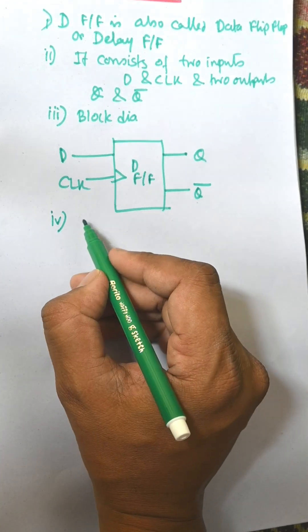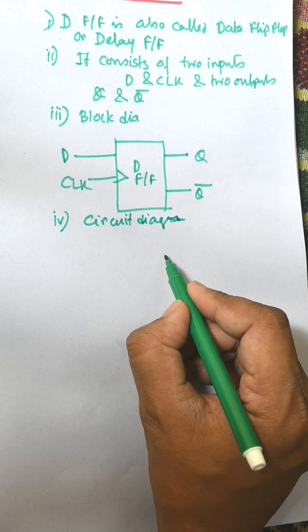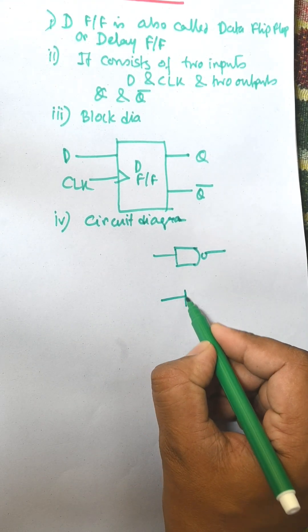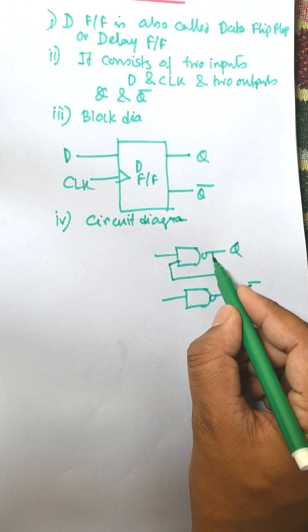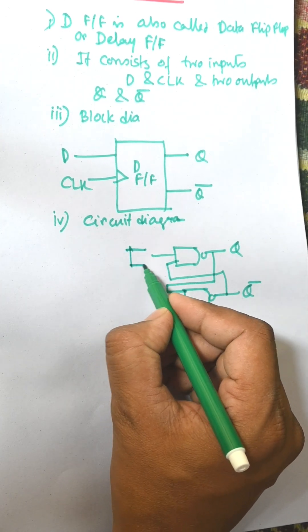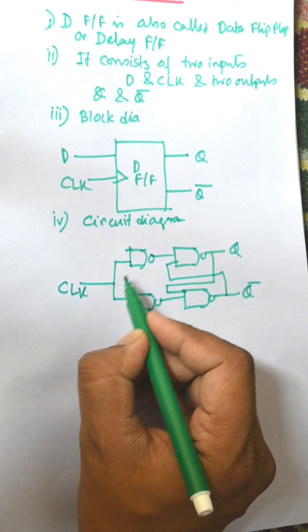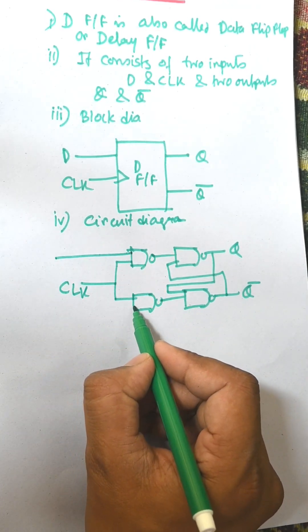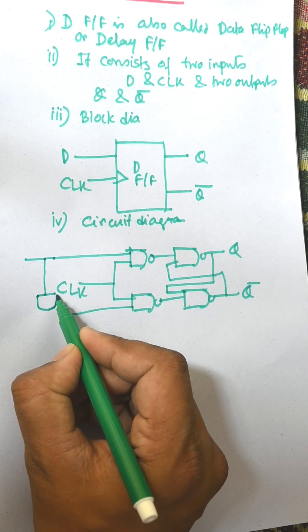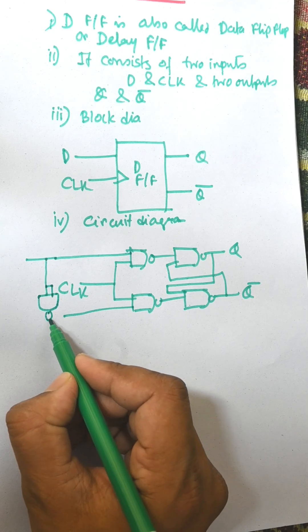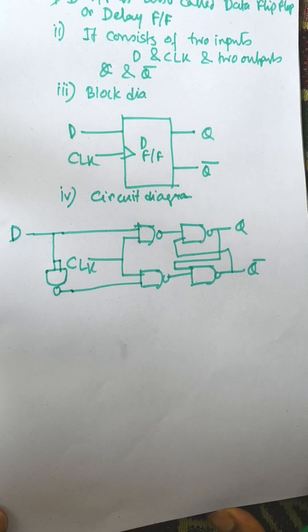The D flip-flop is constructed with the help of an SR flip-flop and a clock. In the circuit diagram, first you need to draw a NAND-based latch. This is Q and Q-bar. Q-bar is connected back, and there is a NAND-based latch connected to CLK. This one is S and this one is R, and S and R are joined by a NAND gate used as an inverter — this is known as the D input. So this is the circuit diagram for the D flip-flop.